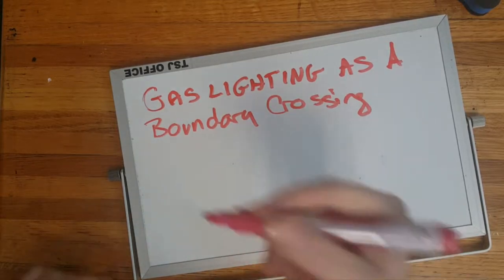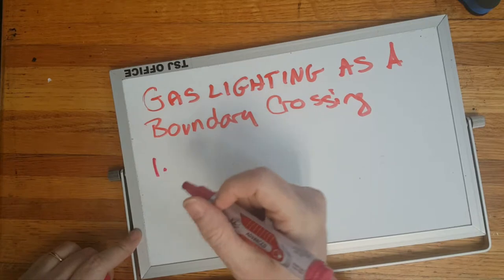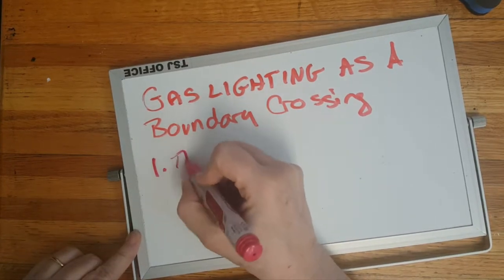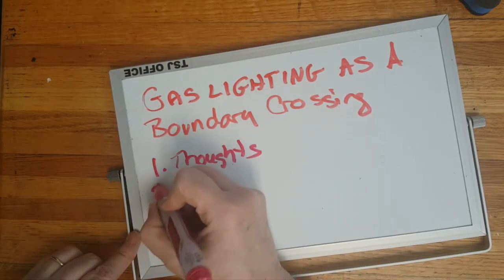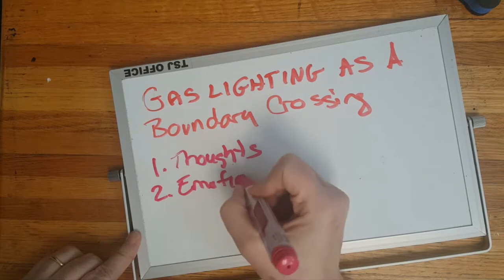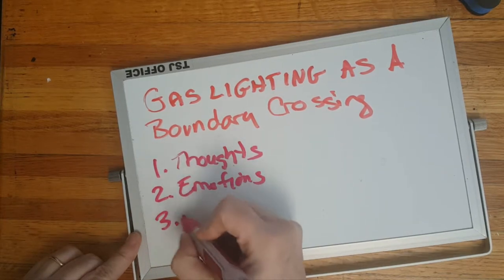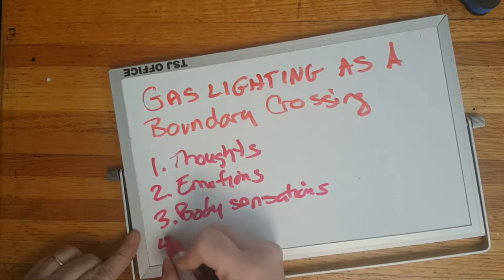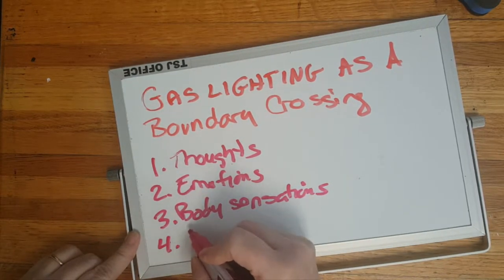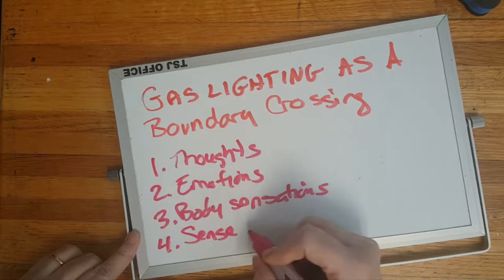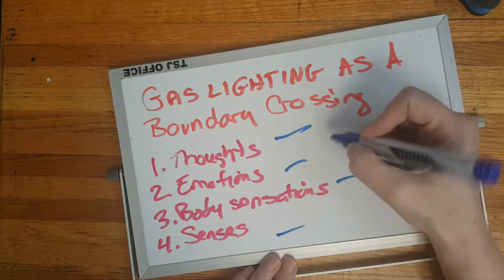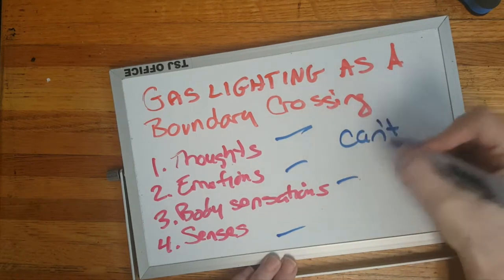Now let me first define gaslighting. Gaslighting is when a person or institution who means you no good is attempting to make you question the evidence of your thoughts, the evidence of your emotions, the evidence of your body sensations, and the evidence of your senses, such as your eyes, ears, nose, etc. The purpose of gaslighting is to make you feel like you can't trust yourself.